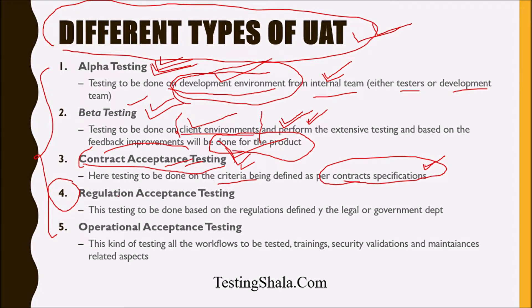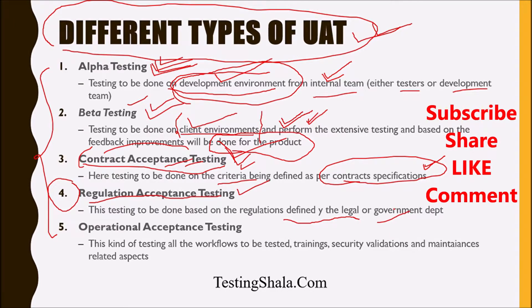The fourth type of user acceptance testing is Regulation Acceptance Testing. There are various legal or government regulations that software products must follow when being released or used — for example, in life science or retail areas. A special test is performed just to ensure the product is legally correct and compliant with regulations. That is called Regulation Acceptance Testing.